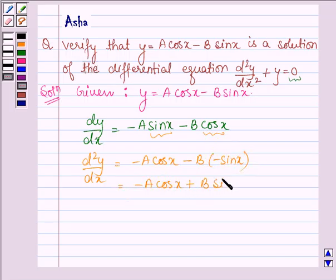And this is equal to minus A cos x plus B sin x. Or this can also be written as, taking minus out, A cos x minus B sin x.